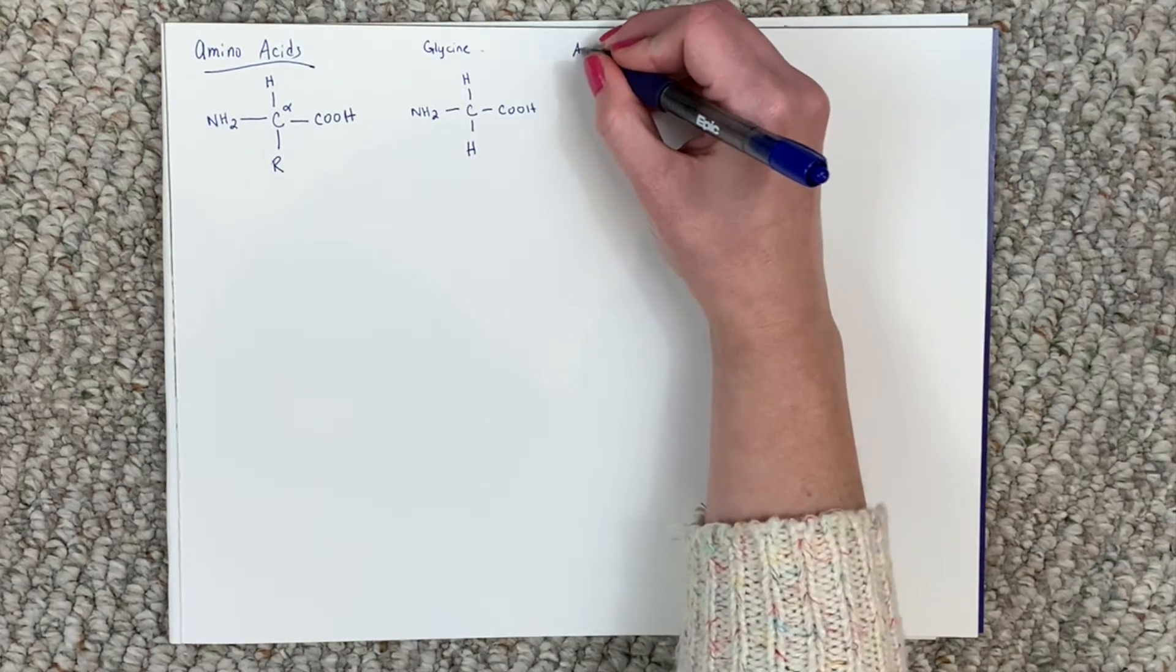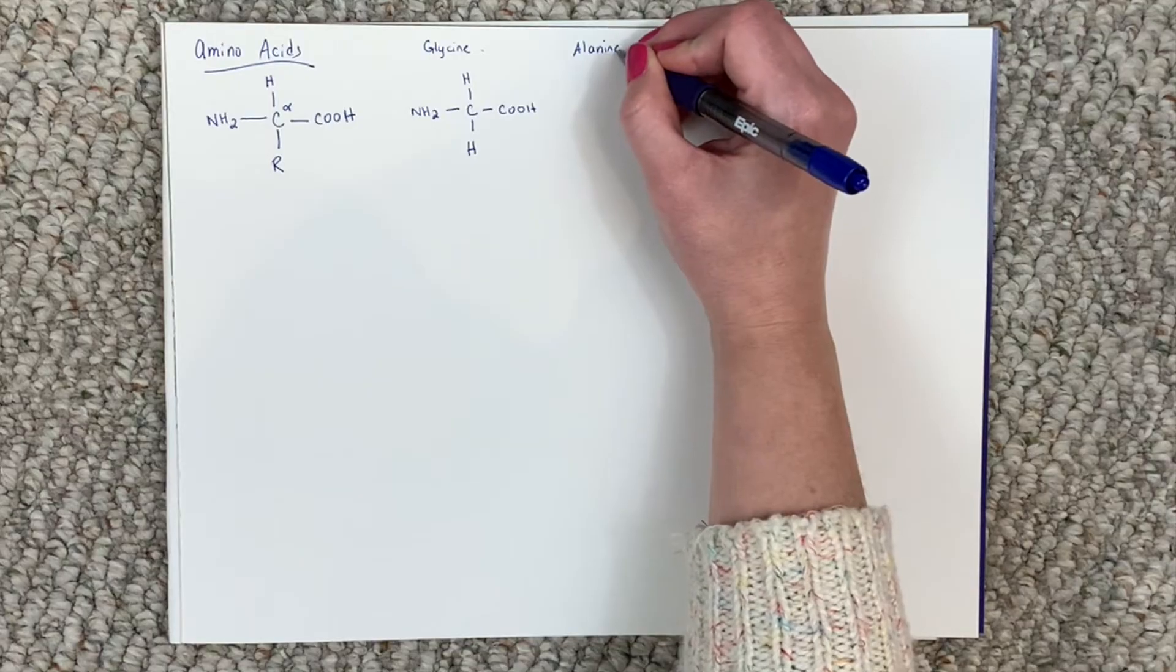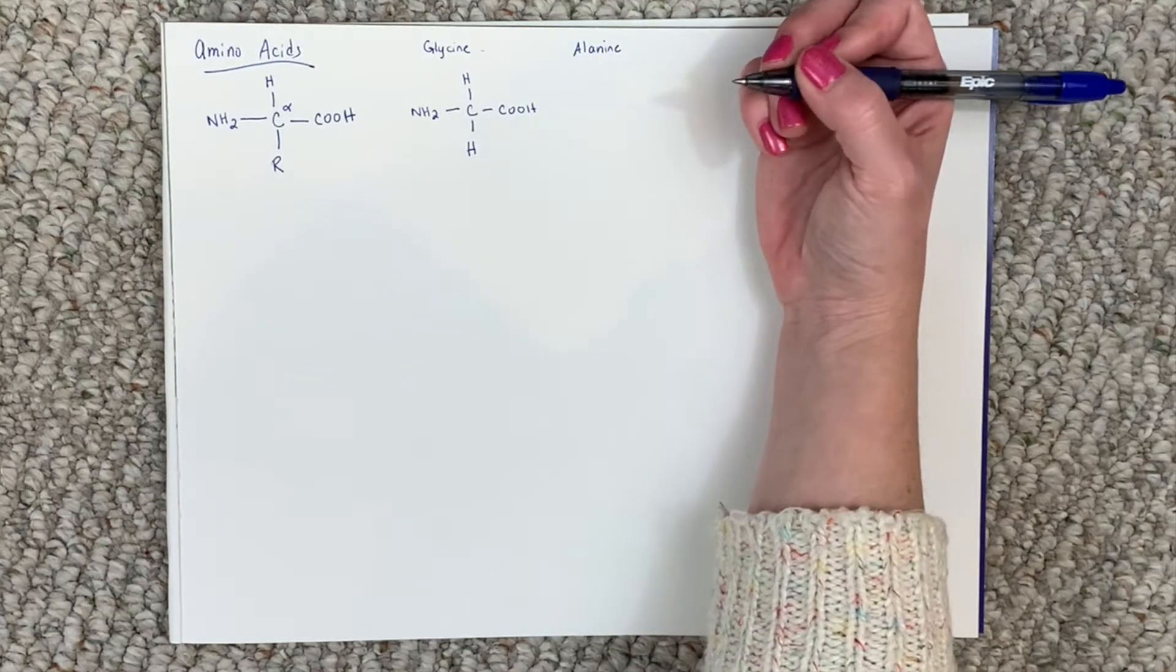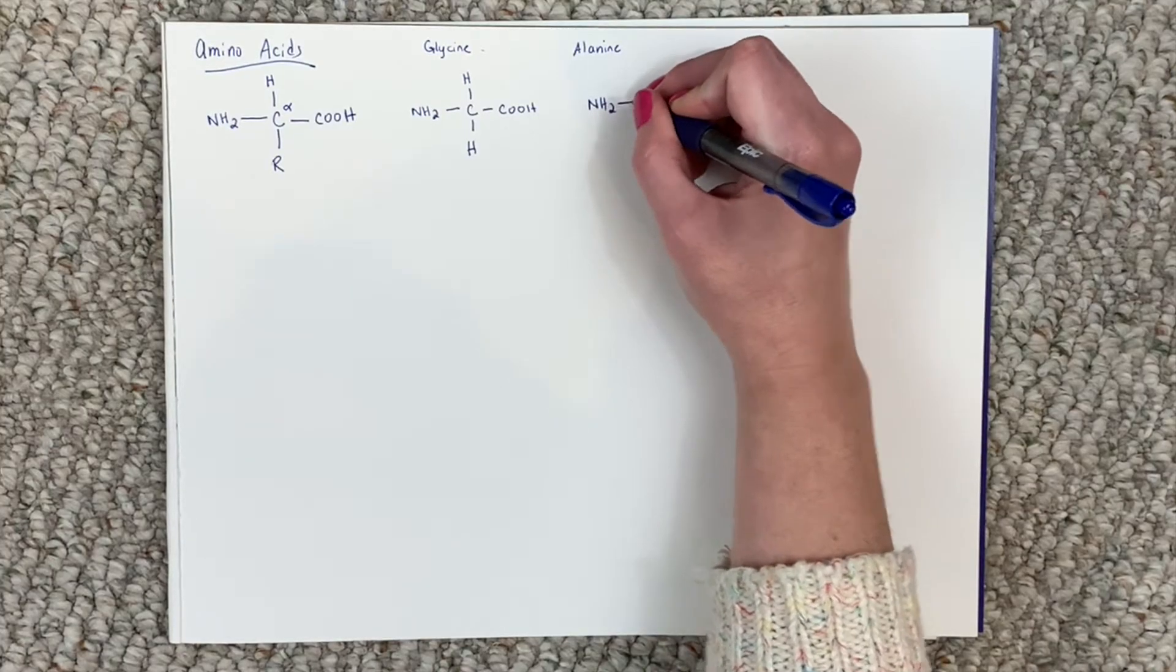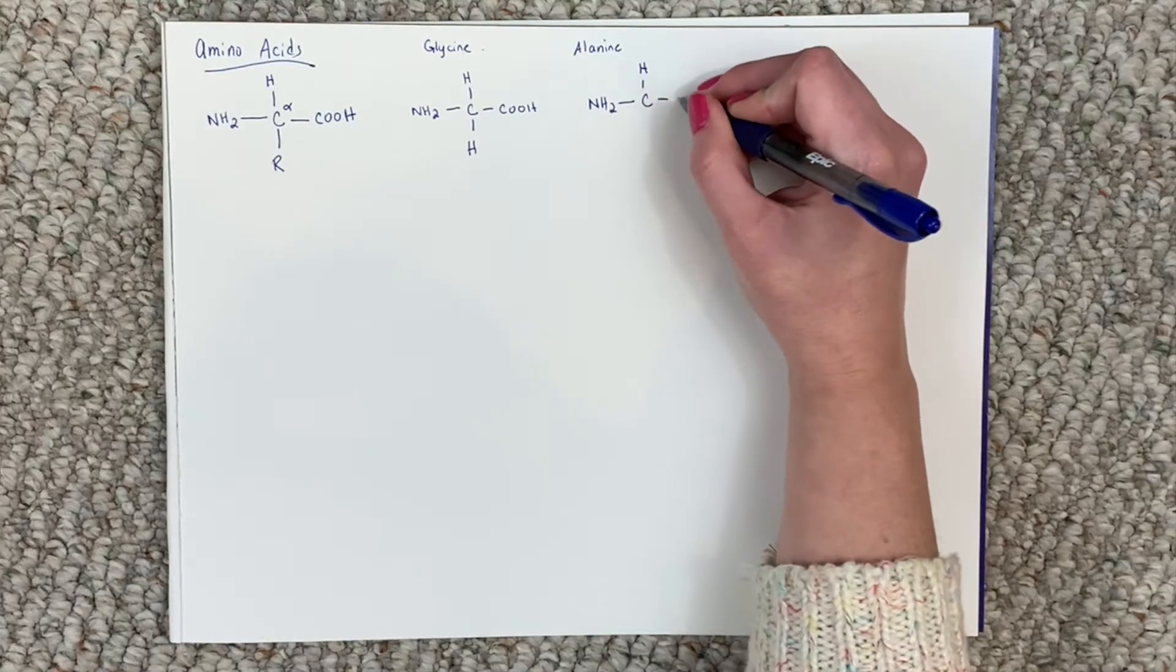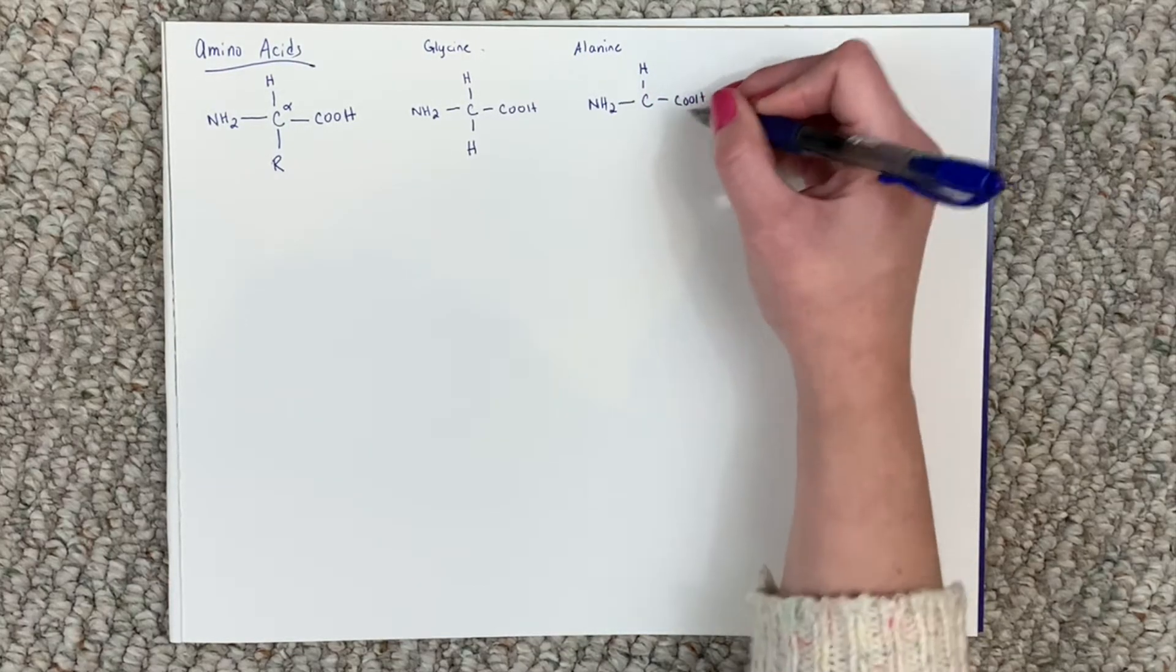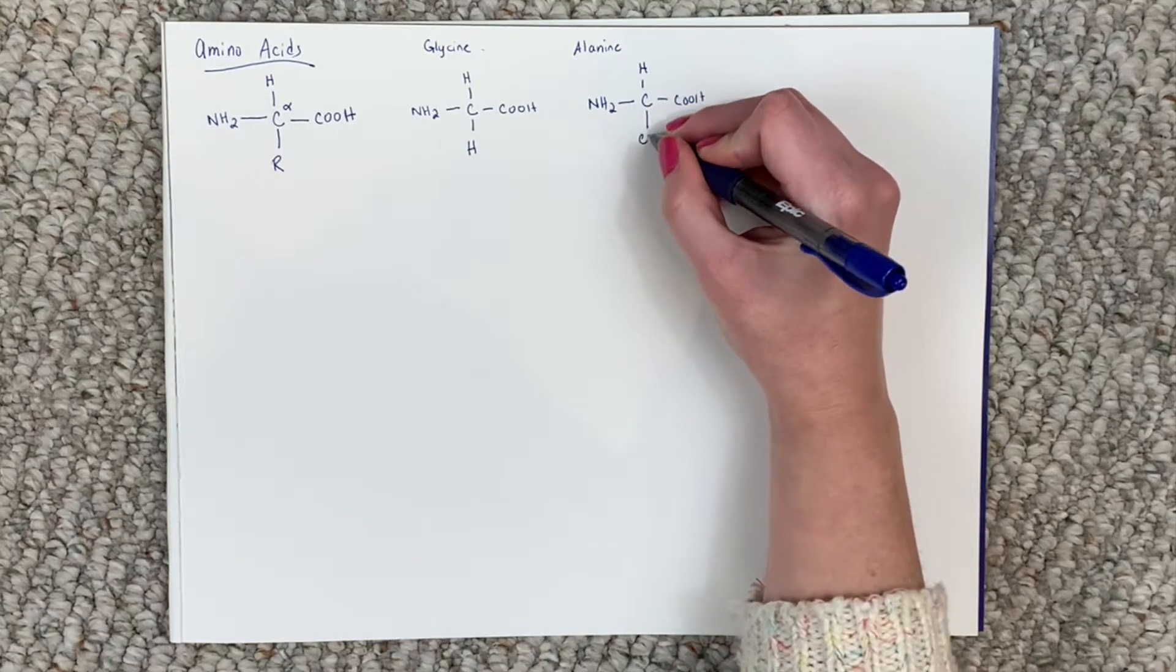So if we want to get a little more complicated, we could do alanine, which its side group or side chain is just a methyl group. So we start with the same thing, NH2, to our alpha carbon, which has a hydrogen, a carboxylic acid, and then its side chain, the side chain of alanine is just CH3.